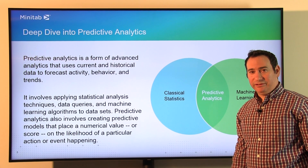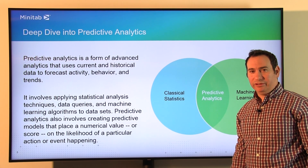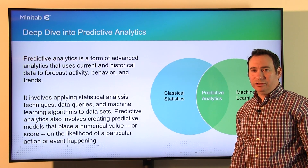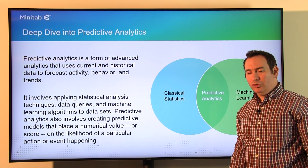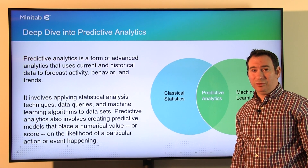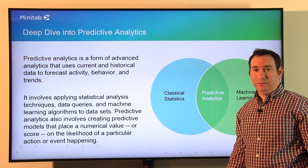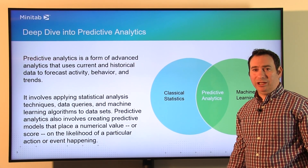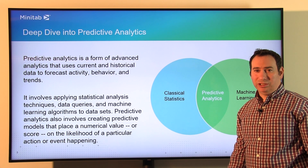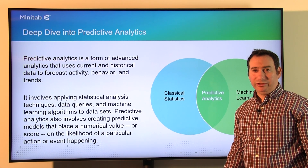Predictive analytics is really where machine learning meets traditional statistics. We all know what traditional statistics is, whether it's simple stuff like averages or medians. There's also more advanced statistics like regression, which is a form of predictive analytics, or other things like t-tests or ANOVA. Machine learning is a fancy term for understanding data and learning from that data. Predictive analytics lets you apply it to your daily life or daily business tasks.